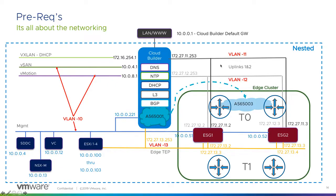To enable vSphere with Kubernetes or application virtual networks (AVNs), those require the edge cluster to get stood up. In order to stand up an edge cluster, you have to have different VLANs — so we've got VLAN 11, 12, and 13 all stood up here to support this edge cluster. That's a requirement from NSX: you cannot share VLAN 10 with this edge cluster.